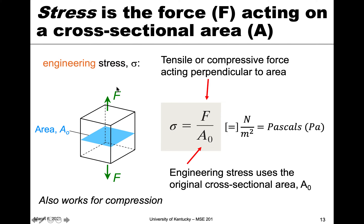This is how we get stress — specifically engineering stress, given the term sigma. So we have sigma equals the force divided by the cross-sectional area. We use A0, the original cross-sectional area, because as we stress this material and it moves, the area will change. So we define engineering stress by using the original cross-sectional area.